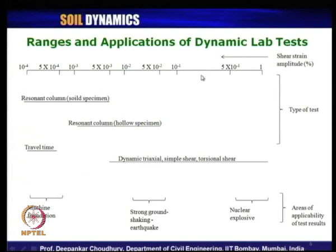The chart defines areas of applicability: nuclear explosive applications are at high shear strain amplitude; strong ground shaking from earthquakes is at intermediate shear strain amplitude; and machine foundation design is at very low shear strain amplitude. Depending on the application, the appropriate test can be selected from this chart.